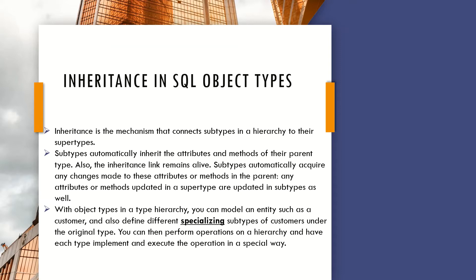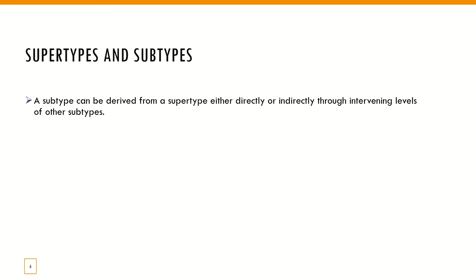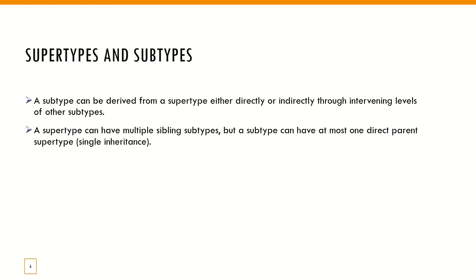A subtype can be directly derived from another subtype because of the super class relationship. A supertype can have multiple subtypes, but a single subtype can only have one parent — this is called single inheritance. So the key rule is: one subtype can only connect to one parent type.